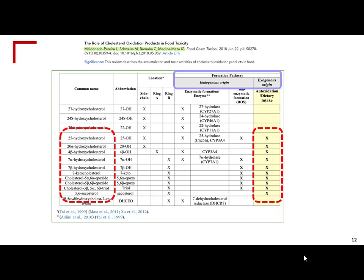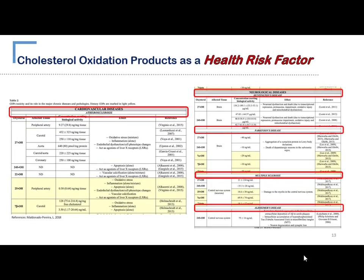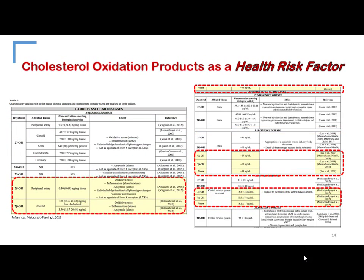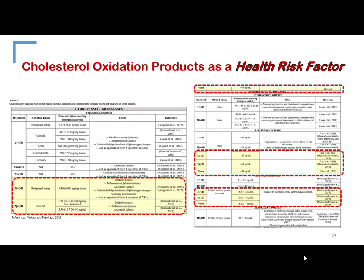Why have these compounds been a health risk factor? Because they have been related with cardiovascular diseases. Specific compounds — and I am highlighting those that come from the diet — have been related with neurological diseases like Parkinson's, Multiple Sclerosis, and Alzheimer's. Some literature has proposed the mechanism and effect of these compounds in marine models.